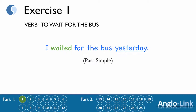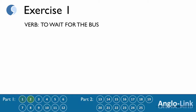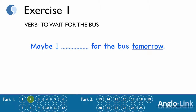Number 2: 'Maybe I ___ for the bus tomorrow.' Answer: 'Maybe I will wait for the bus tomorrow.' Future simple.